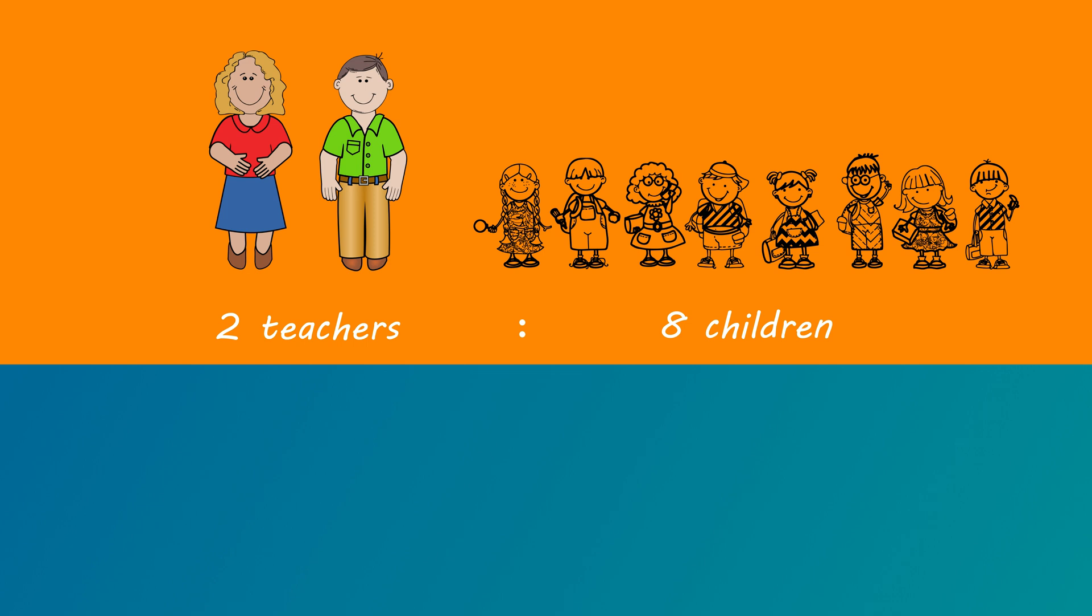Ratios are written only with whole numbers, so the first step is to delete the words. That's two is to eight. Notice that both numbers can be divided by two to simplify the ratio to the smallest whole numbers. So the final answer is one is to four. This means that one teacher supervises four children.